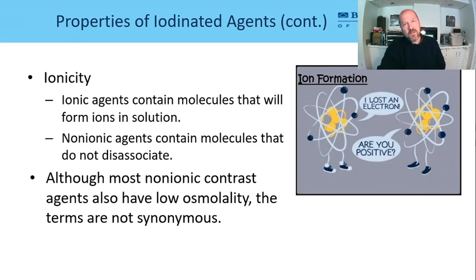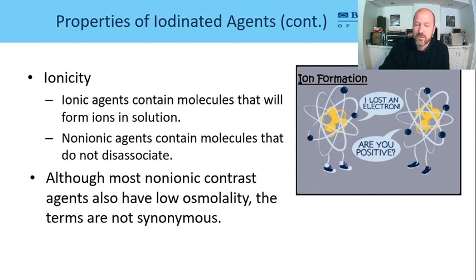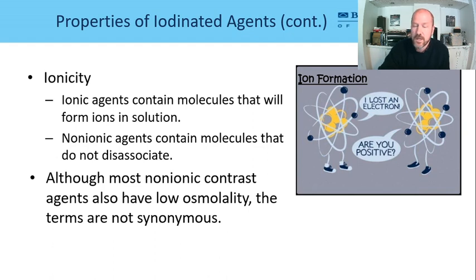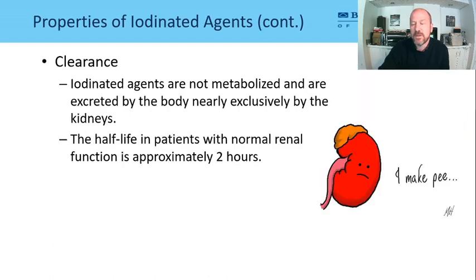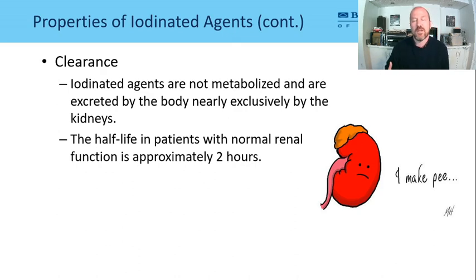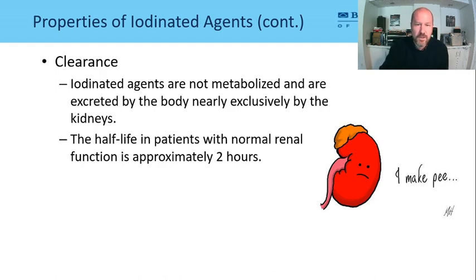Ionicity is the property of contrast media where it dissociates into ions. A non-ionic contrast agent has molecules that do not dissociate easily. Non-ionic contrasts are generally low osmolality as well, and we largely use non-ionic contrast media. Clearance means how quickly the kidneys can get rid of it — for normal kidney function, the half-life is about two hours. Most of it will be excreted within 24 hours, and patients can be reassured their body will get rid of most of it quickly.